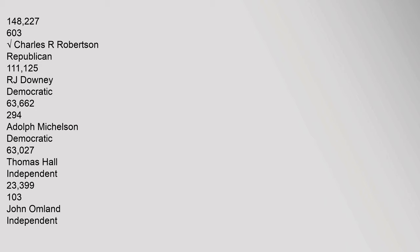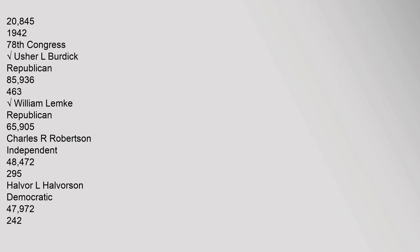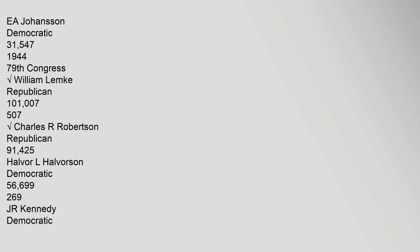1940 (continued) — John Omelund, Independent: 20,845. 1942 (78th Congress) — Usher L. Burdick: 85,936 (46.3%); William Lemke: 65,905; Charles R. Robertson: 48,472 (29.5%); Halvor L. Halverson, Democratic: 47,972 (24.2%); E.A. Johansson, Democratic: 31,547.